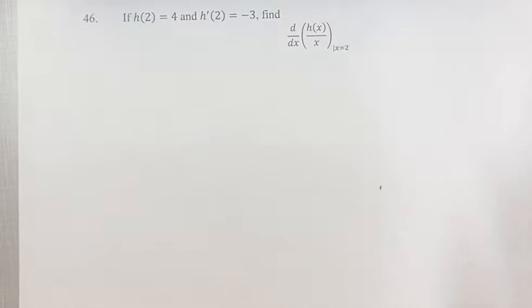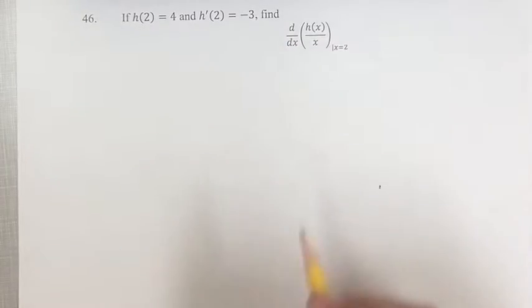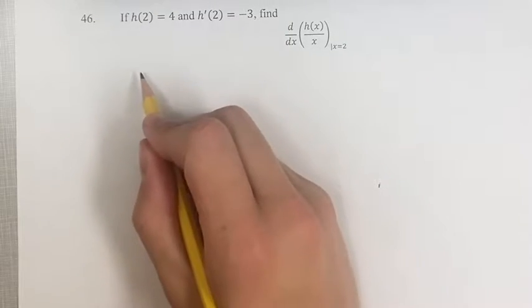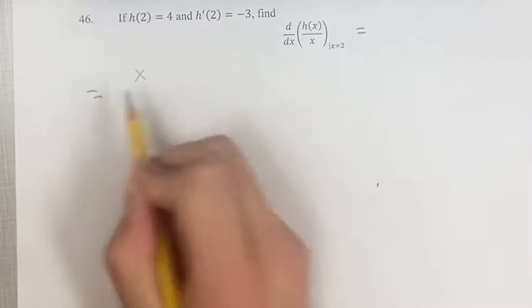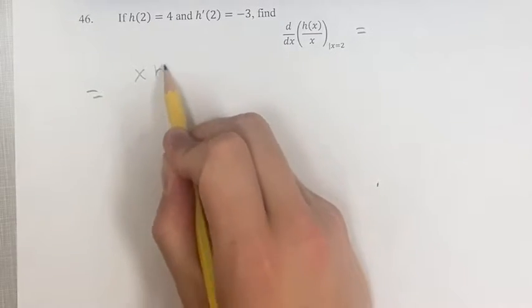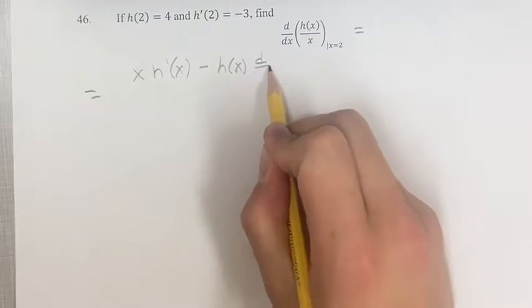So first, not worrying about when x is equal to 2, let's just find the general function of the derivative of this. So using the quotient rule, you're going to have the denominator times the derivative of the numerator, minus the numerator times the derivative of the denominator.